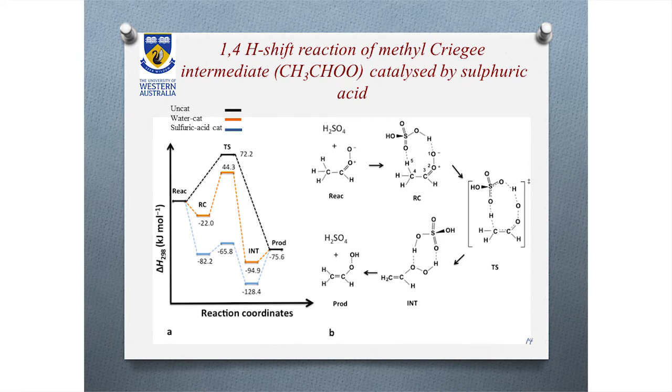The Criegee intermediate is formulated as a zwitterion in the original work. Here is the mechanism of sulfuric acid catalysis of this reaction. By approaching sulfuric acid to the Criegee intermediate, a high interaction is created between the oxygen and the beta-hydrogen of the Criegee intermediate, described as a weak hydrogen bond and a normal hydrogen bond. The transition structure involves nucleophilic attack of the oxygen on the hydrogen of sulfuric acid, leading to changes in the distance between oxygen and hydrogen, and carbons three and four will contract while the distance between carbon four and five elongates along the sulfuric acid.